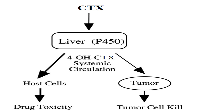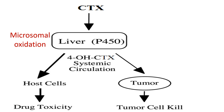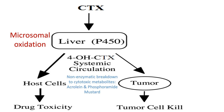Here is our pathway of how we go from the drug formulation to killing off cells. We've got cyclophosphamide in its oral formulation — 90% of that is absorbed through the GI. It heads to the liver, where under first-pass effect it undergoes microsomal oxidation, and we add a hydroxy group onto it to get 4-hydroxy cyclophosphamide. That goes into systemic circulation, where it undergoes non-enzymatic breakdown into cytotoxic metabolites.